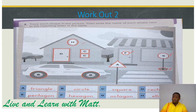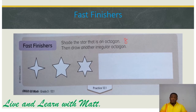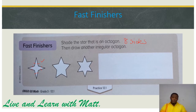Now let's go to the first finishers. Shade the star that is an octagon. Octagon means a polygon with eight sides. So let's count — one, two, three, four, five, six, seven, eight — nine. So it's more than octagon, more than eight sides. Let's count the next one — one, two, three, four, five, six, seven, eight, nine, ten, eleven, twelve. This is not an octagon either. So the only one that is an octagon is the correct shape. We are going to shade that.